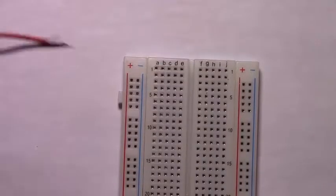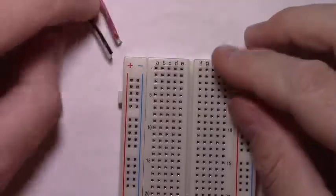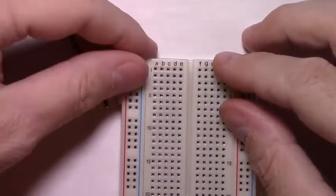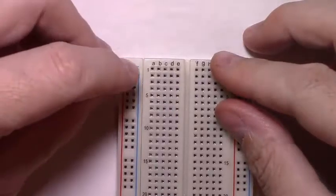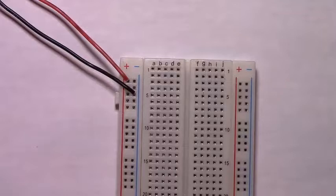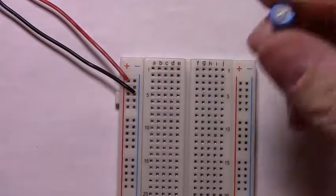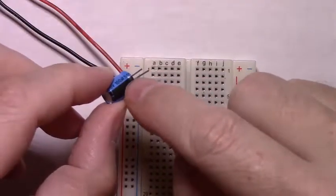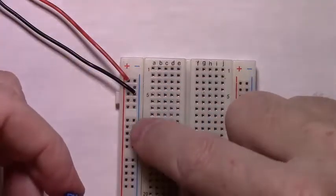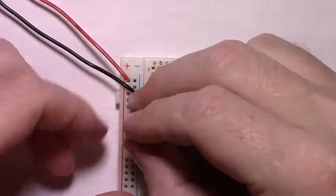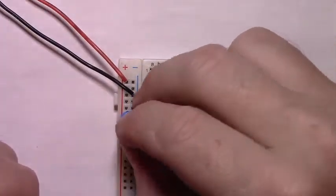First thing one will want to do is connect their power supply to the breadboard. Next, take that 100-microfarad capacitor, making sure to place the negative leg in the blue rail, and place it in the breadboard like so.